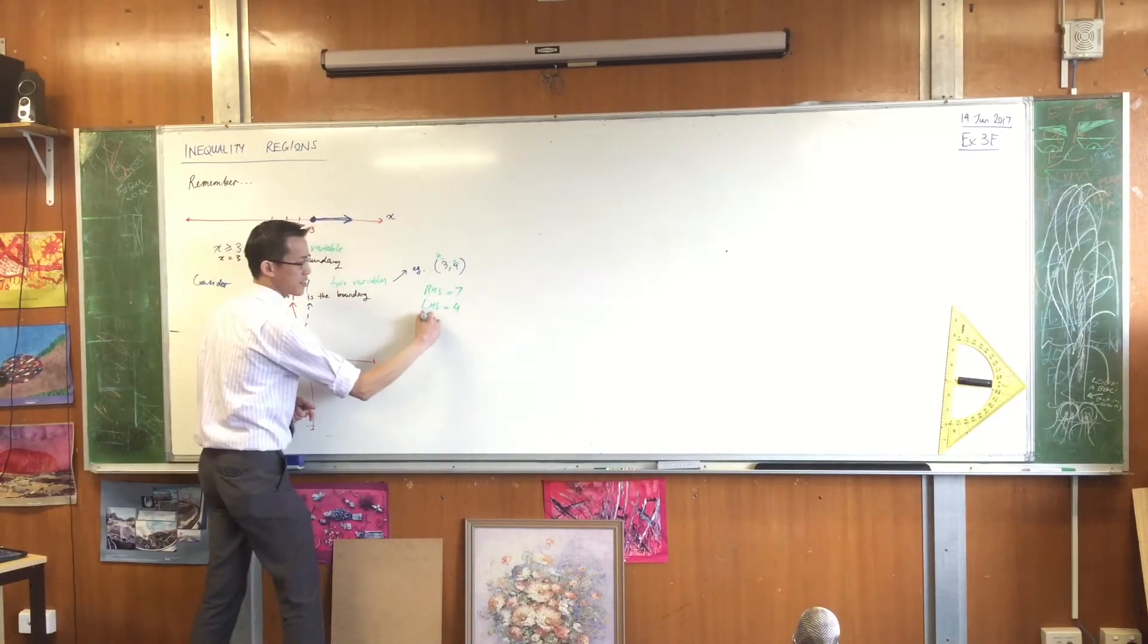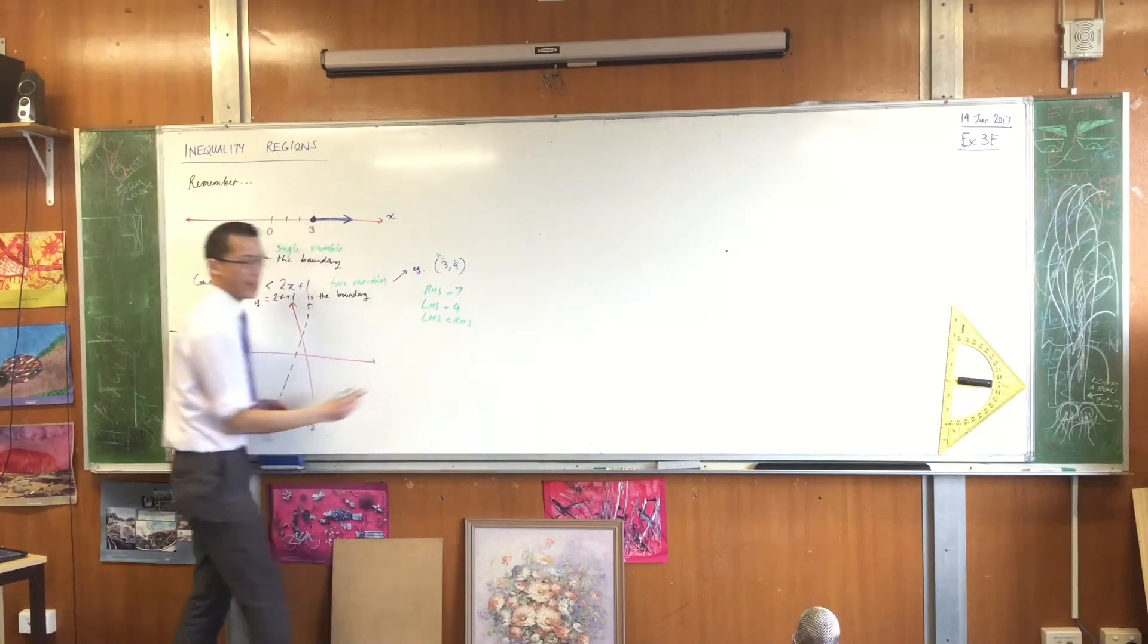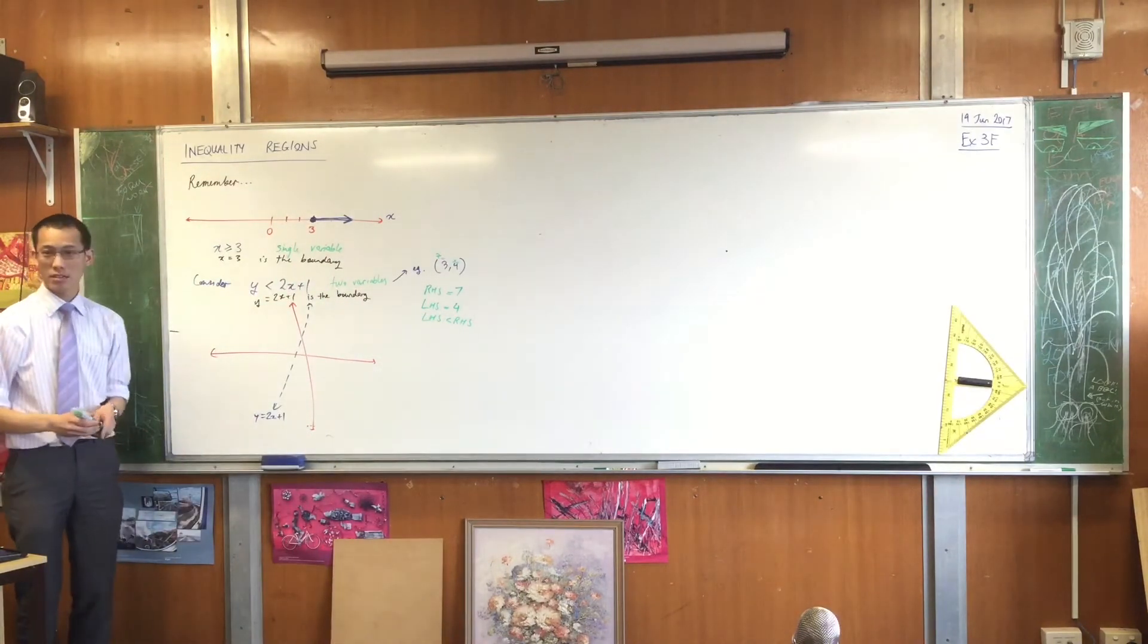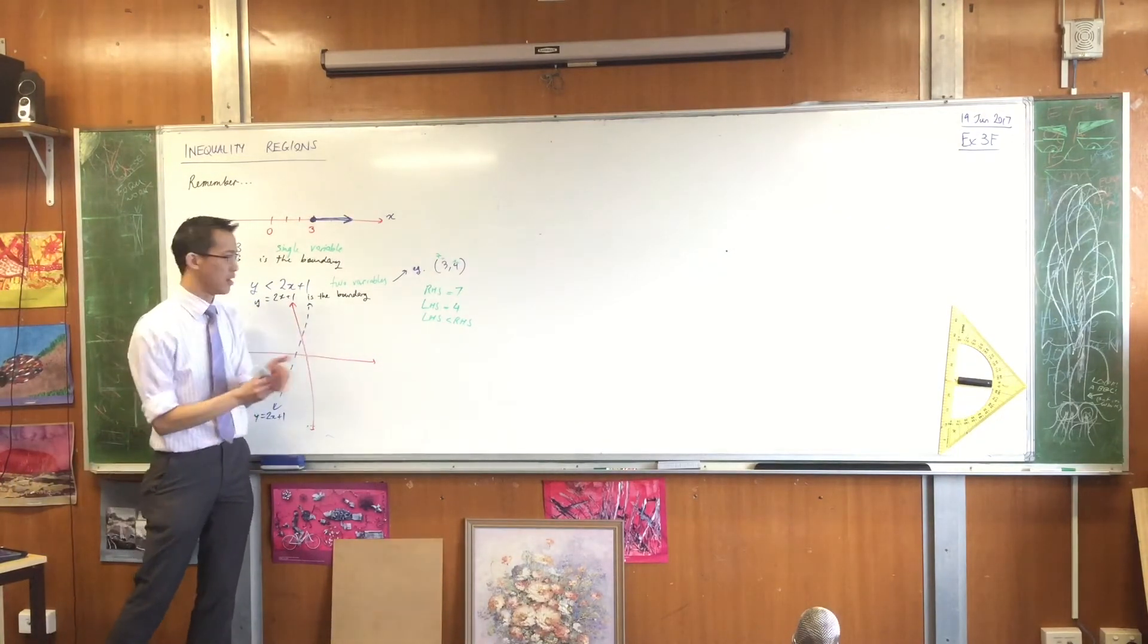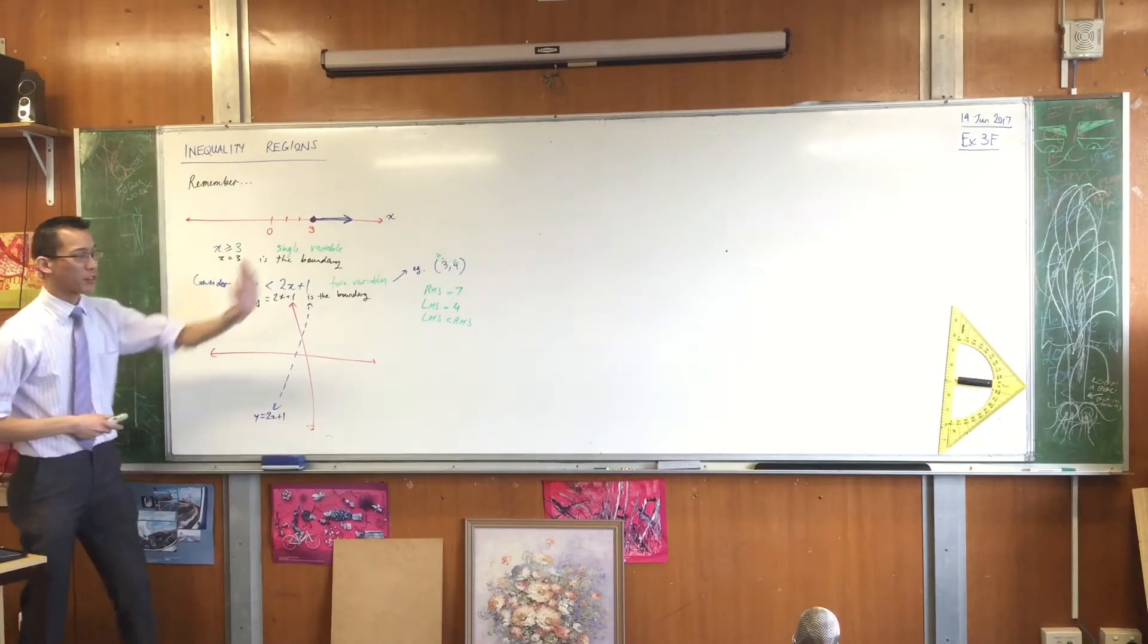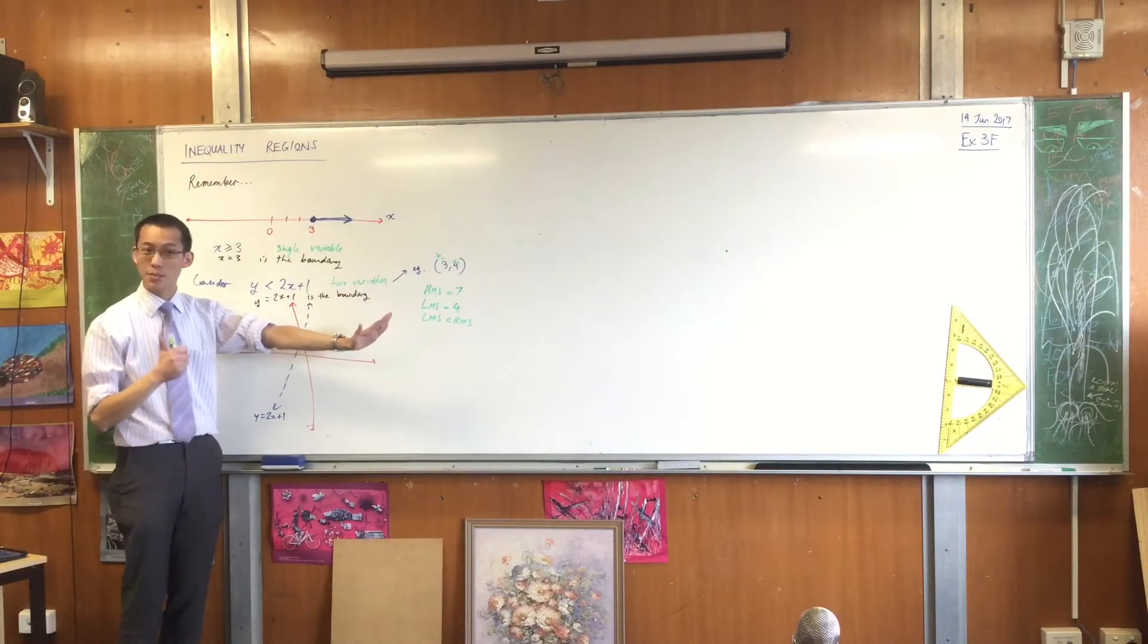So you can see, in this case, the left-hand side is less than the right-hand side. Do you agree? And that's what I wanted, isn't it? That's the direction of the inequality facing in the correct direction. That's why I started with the right-hand side, by the way. So therefore, 3, 4 satisfies my inequality.